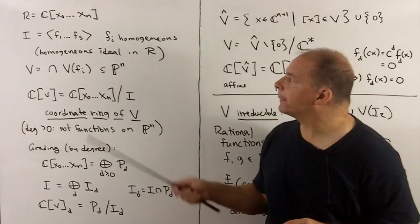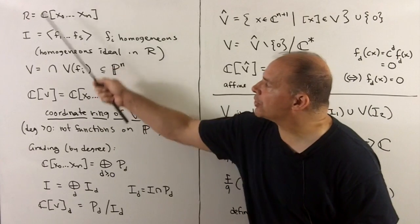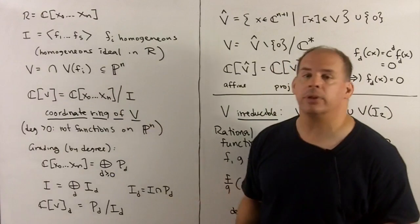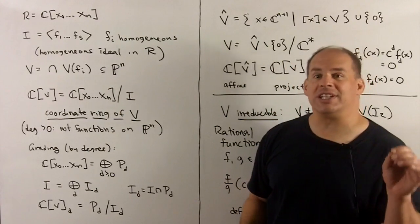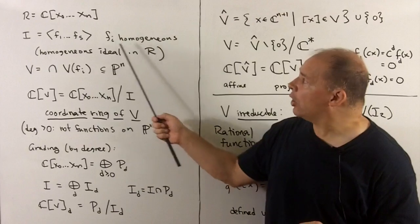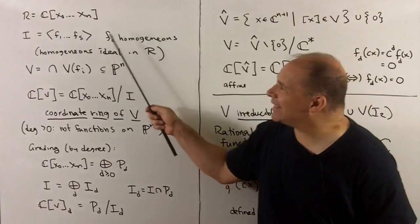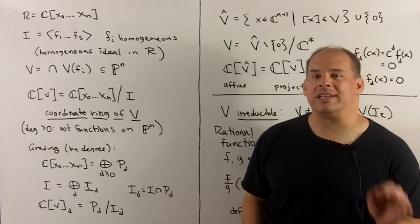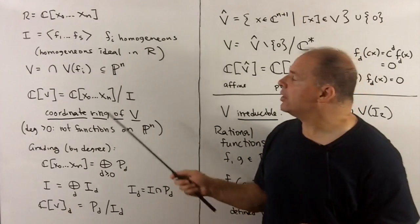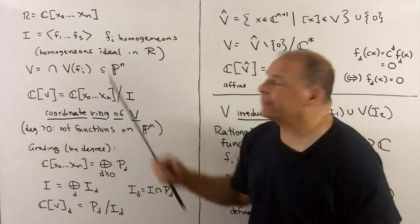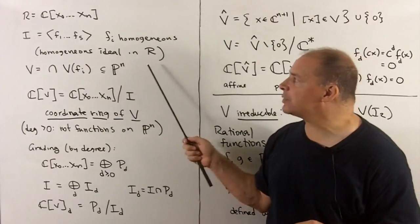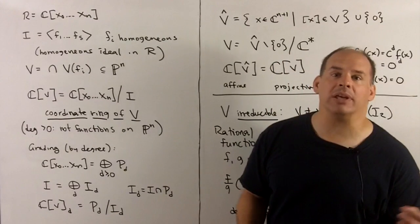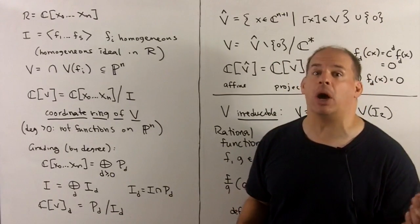For the first part, as usual, we start with the ring of polynomials in n plus 1 variables over the complex numbers. We have the notion of a homogeneous ideal — we're going to take finitely many homogeneous polynomials and take the ideal generated by those. With that, we can define a projective variety by taking each generator, considering its vanishing set in projective n-space, and taking the intersection. From that, we can get the Zariski topology on projective n-space and so on.